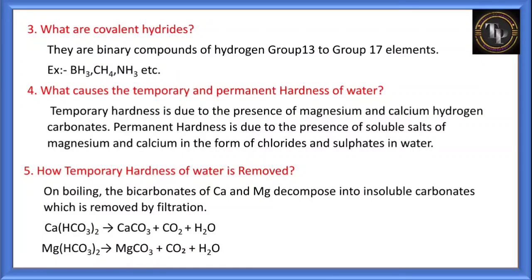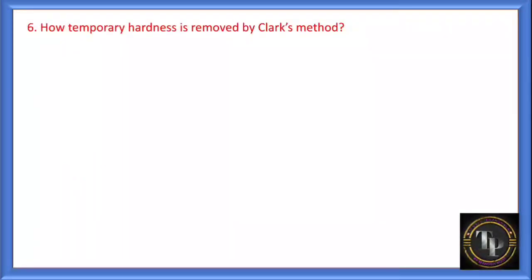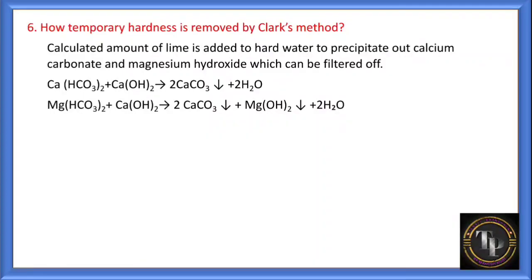Correction: on boiling, calcium carbonate (CaCO3) precipitate is formed, but magnesium hydroxide Mg(OH)2 precipitate is formed — not magnesium carbonate. This is because magnesium hydroxide has a lower solubility product compared to magnesium carbonate. These precipitates — CaCO3 and Mg(OH)2 — are filtered off and removed, making the water soft. In Clark's method, water containing calcium or magnesium hydrogen carbonate is treated with calcium hydroxide (lime), again forming CaCO3 and Mg(OH)2 precipitates which are filtered off.